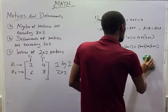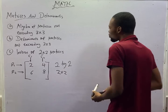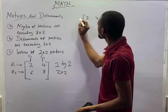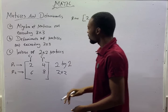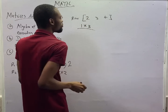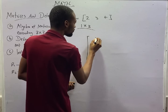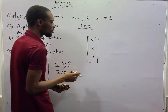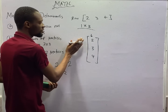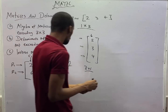When a matrix has only one row, it is referred to as a row matrix. When a matrix has only one column, it is referred to as a column matrix. For example, [2, 3, 4] is a row matrix — it has just one row and three columns, making it a 1 by 3 matrix. A matrix with elements 2, 3, 4 arranged vertically has only one column and three rows — this is a 3 by 1 matrix, also called a column matrix.